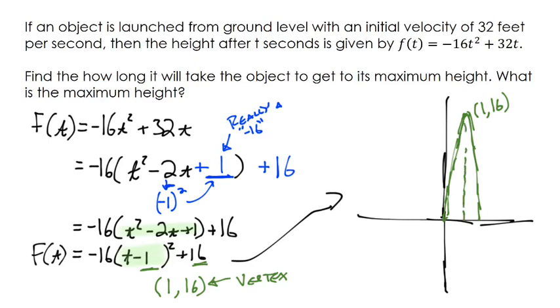1 is our t value and 16 is our f(t), where t is time and 16 is the height. To answer these questions: find how long it takes the object to get to its maximum height. The answer is it takes one second. What is the maximum height? 16 feet. By taking this quadratic and writing it in vertex form, we can answer some questions about what's happening here.